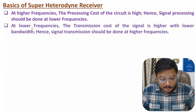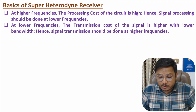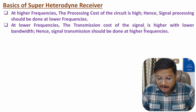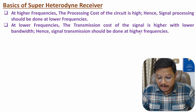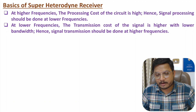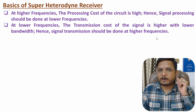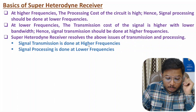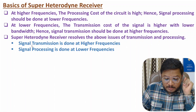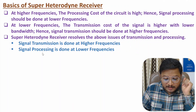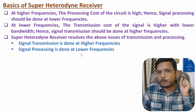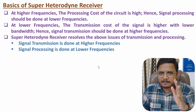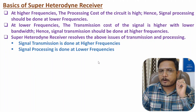At lower frequencies, transmission cost is high. That is why signal transmission has to be done at higher frequencies. So in the super heterodyne receiver, we do signal transmission at higher frequencies and signal processing at lower frequencies. Let me explain that with the block diagram.